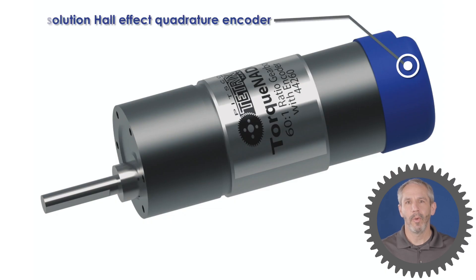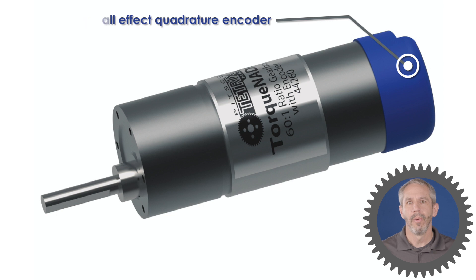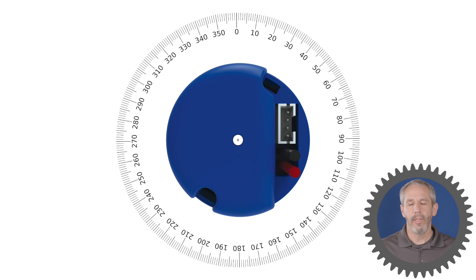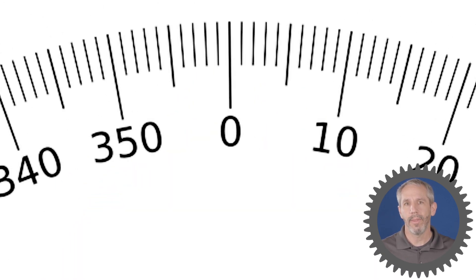Tetrix torque NATO motors are equipped with a high-resolution hall effect quadrature encoder. We'll save what all that means for another video. But for now, what's important to know is that you can precisely control each torque NATO motor down to one fourth of one degree.